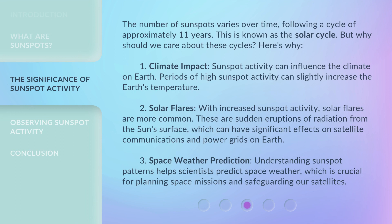The number of sunspots varies over time, following a cycle of approximately 11 years. This is known as the solar cycle. But why should we care about these cycles? First, climate impact: sunspot activity can influence the climate on earth, and periods of high sunspot activity can slightly increase the earth's temperature. Second, solar flares: with increased sunspot activity, solar flares are more common — these are sudden eruptions of radiation from the sun's surface, which can have significant effects on satellite communications and power grids on earth. Third, space weather prediction: understanding sunspot patterns helps scientists predict space weather, which is crucial for planning space missions and safeguarding our satellites.